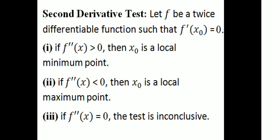Second Derivative Test: Let f be a twice-differentiable function such that f'(x₀) = 0. If f''(x₀) > 0, then x₀ is a local minimum point. If f''(x₀) < 0, then x₀ is a local maximum point. If f''(x₀) = 0, the test is inconclusive.